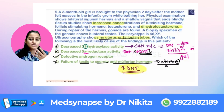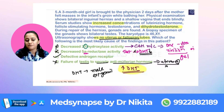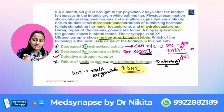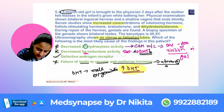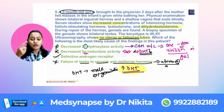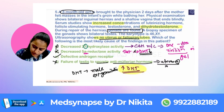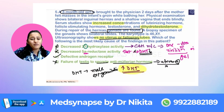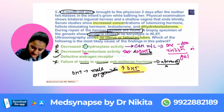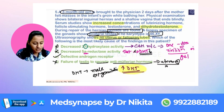Because dihydrotestosterone is not able to act, the male external genitalia will not develop. So even if the individual is a genetic male with testes, there will be ambiguous genitalia. The question describes this as a girl because phenotypically, externally, it is female genitalia. There is bilateral inguinal hernias and a shallow vagina that ends blindly. The gonads found during hernia repair are undescended testes. Testes are present and the karyotype is 46XY.